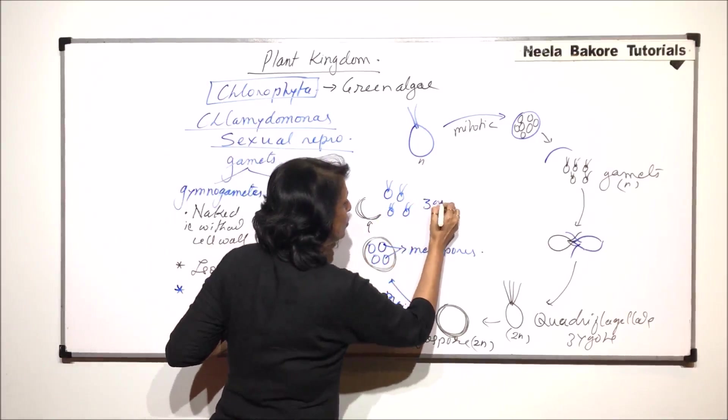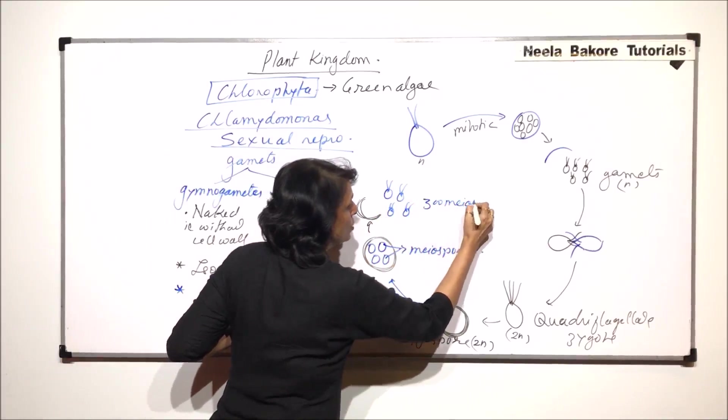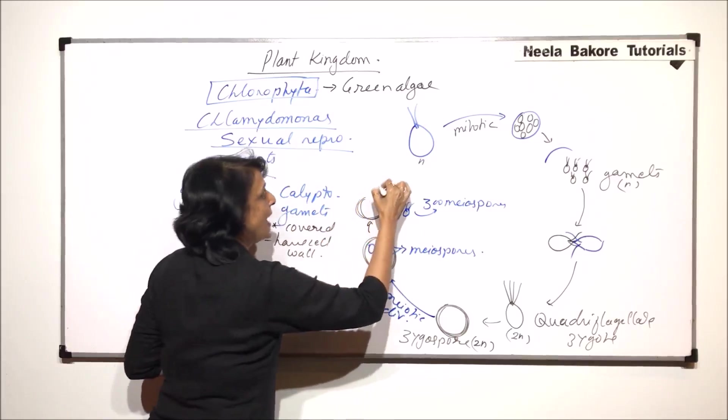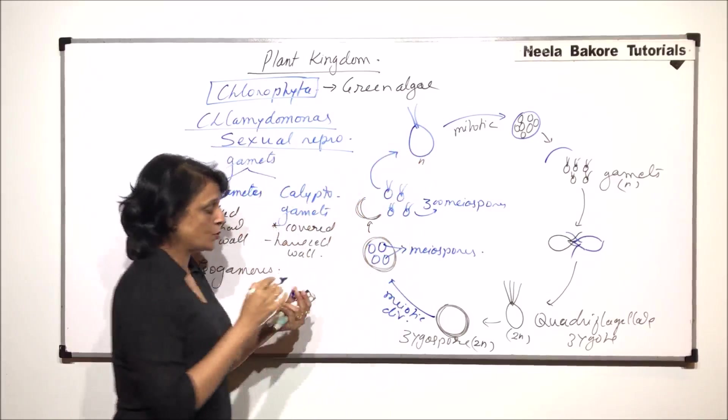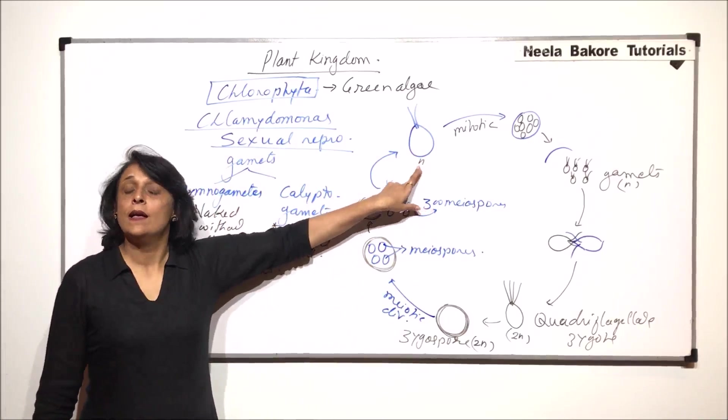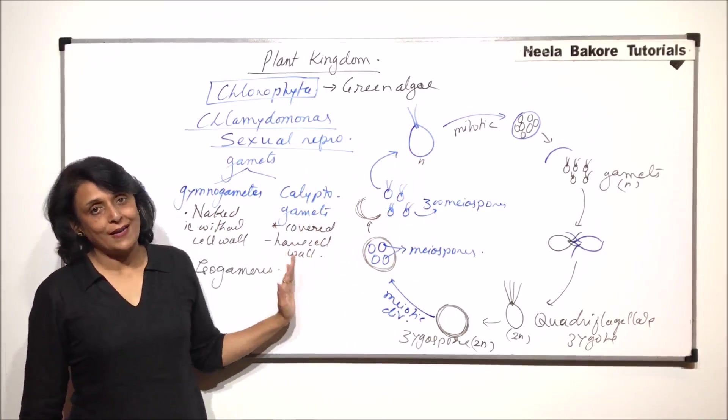Now when these spores are released, they are going to have two flagella. Each spore is going to have these two flagella. We start calling them zoomeiospores. Each zoomeiospore will grow to the normal size and will start acting as the haploid organism.